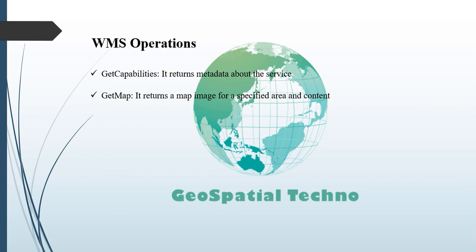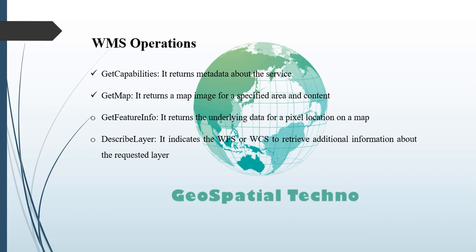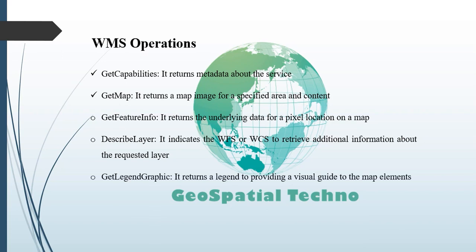Optional WMS operations include GetFeatureInfo, which returns the underlying data including geometry and attribute values for a pixel location on a map — the layer supporting this operation is marked as queryable. DescribeLayer indicates the WFS or WCS to retrieve additional information about the requested layer. GetLegendGraphic returns a legend as an image for the map, providing a visual guide to the map elements. A client needs to know the location of the WMS service — the endpoint — to interact with the server.